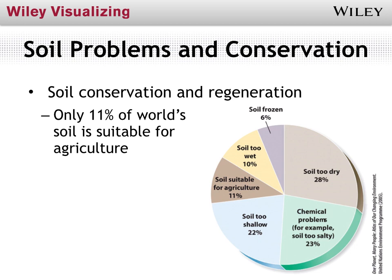Keep that 11% number in mind — not all that land is equally suitable for agriculture. Some of it is very productive and some is not really productive at all. We may use it to grow crops but it's not nearly as productive as some other land might be. So we've got to do a good job of conserving the land we do focus on for agriculture and rebuilding those soil resources as they become used.